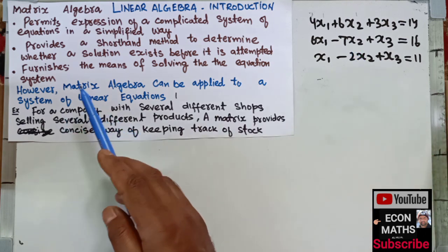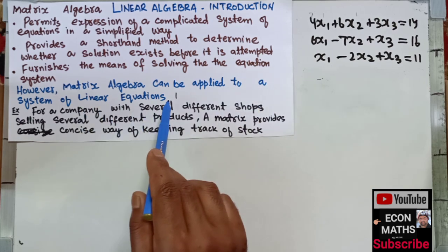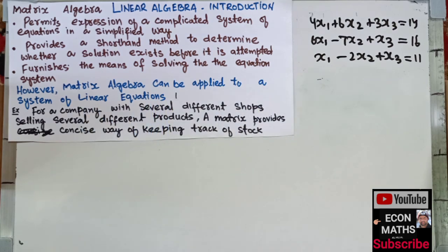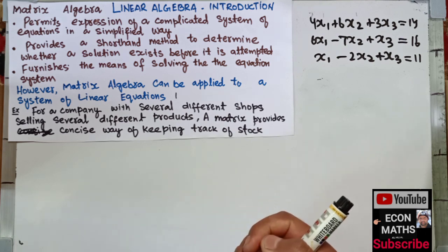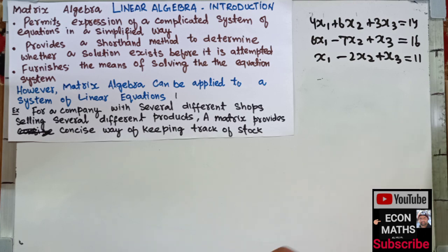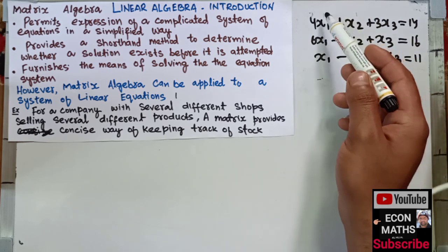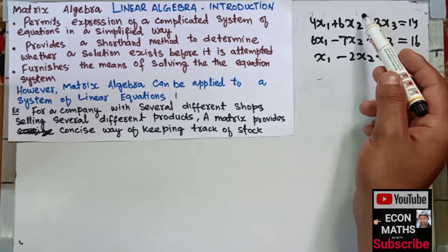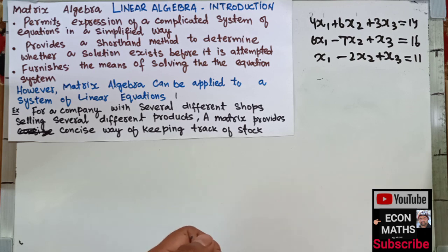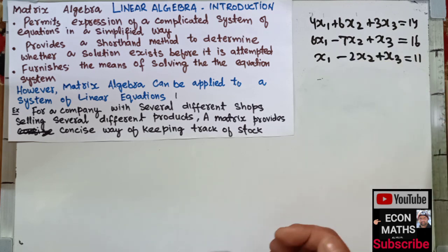Matrix algebra can be applied to systems of linear equations only. A linear equation is one where the degree of the variable is one — that is, the highest power of the variable is one. Here we can see the exponent is one for each variable, so these are linear equations. We can use matrix algebra only for systems of linear equations.